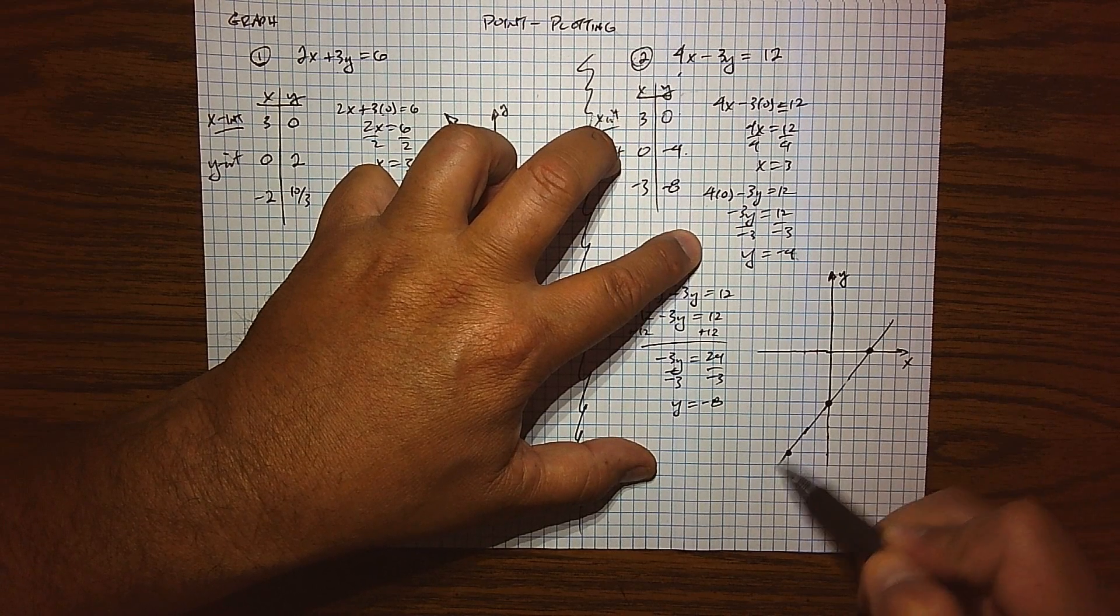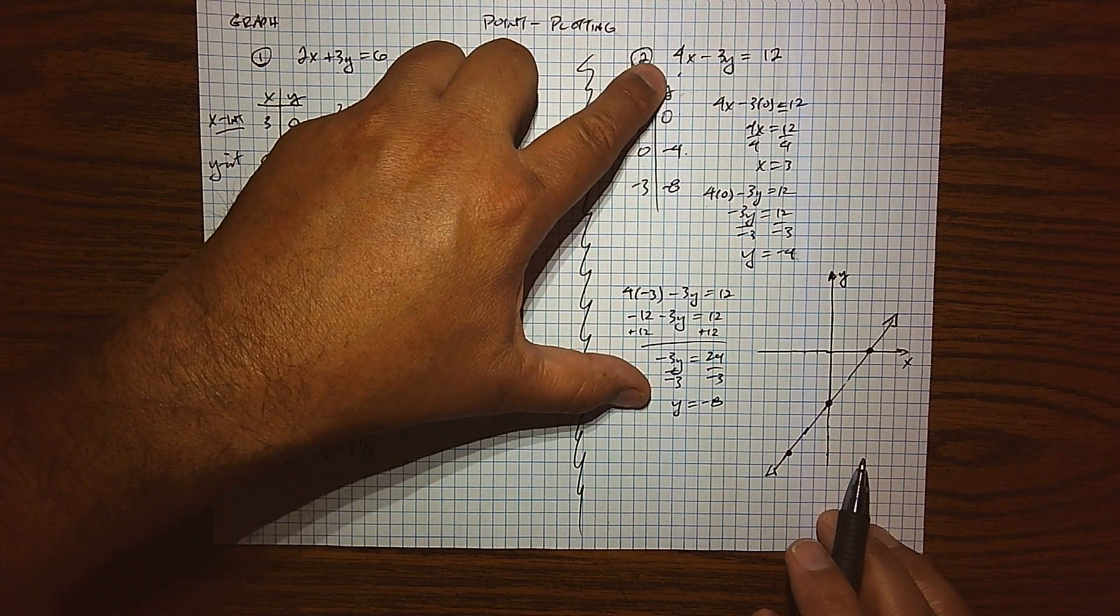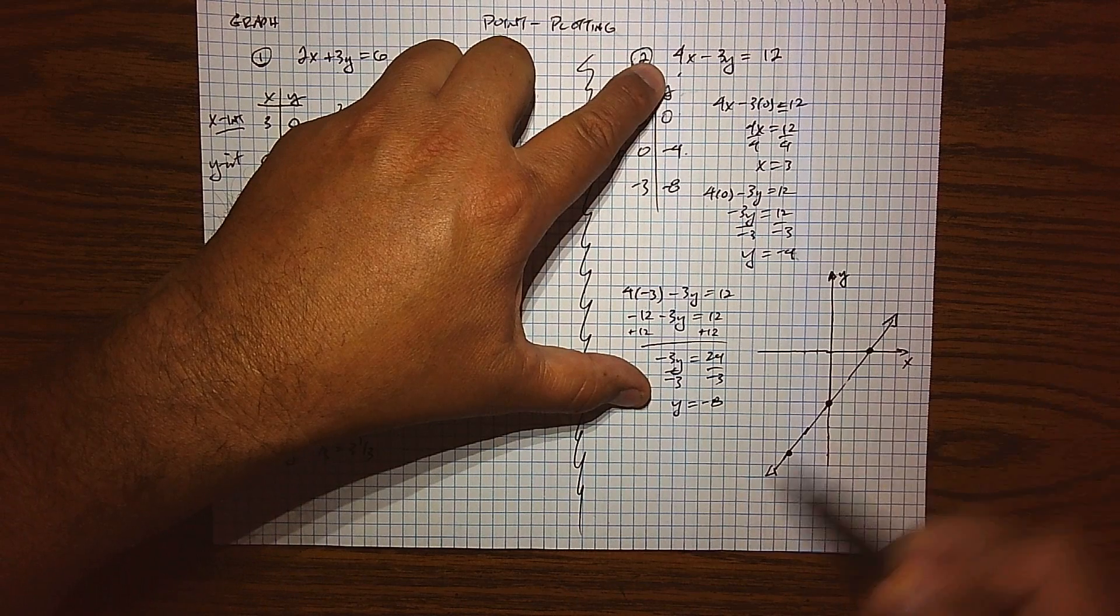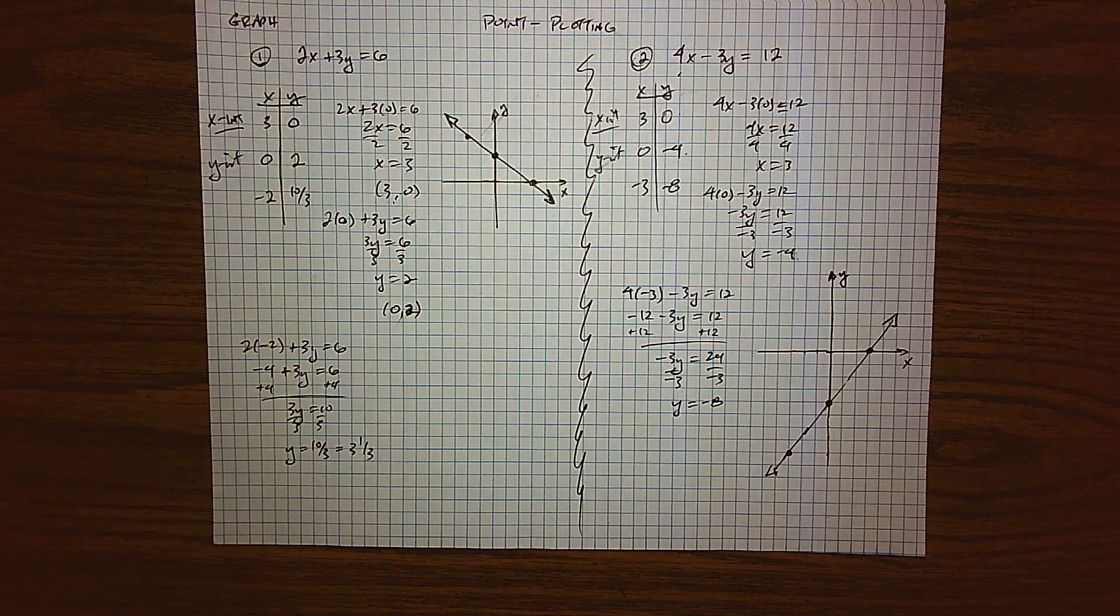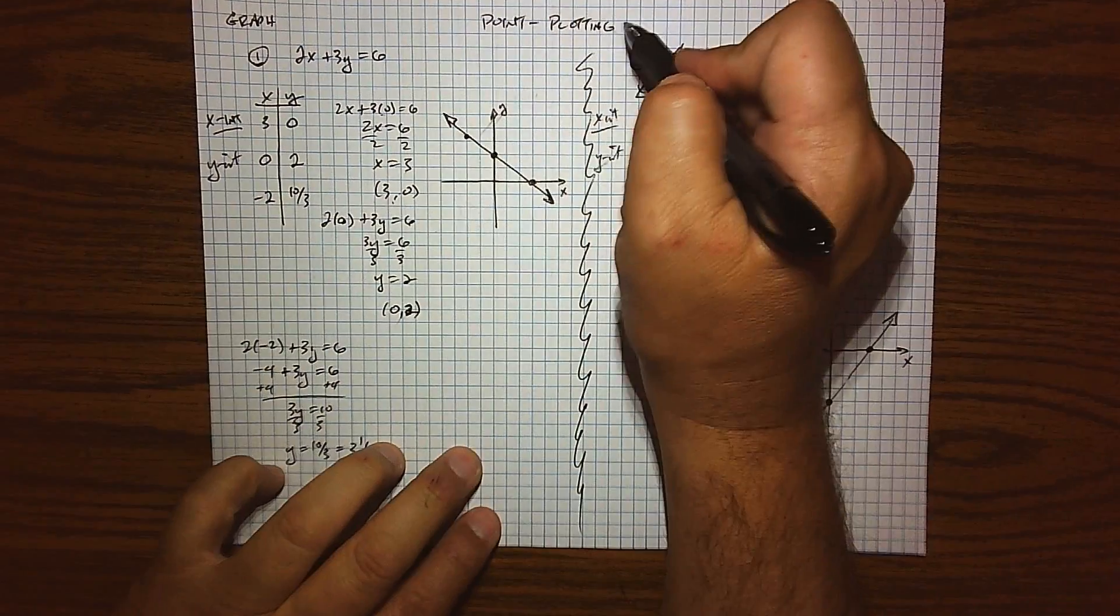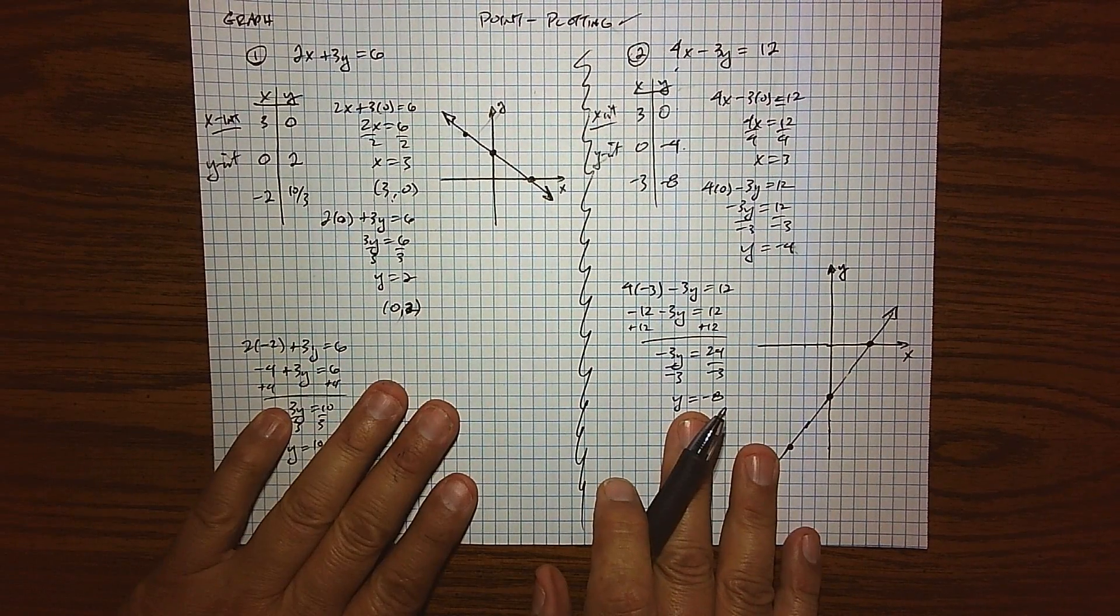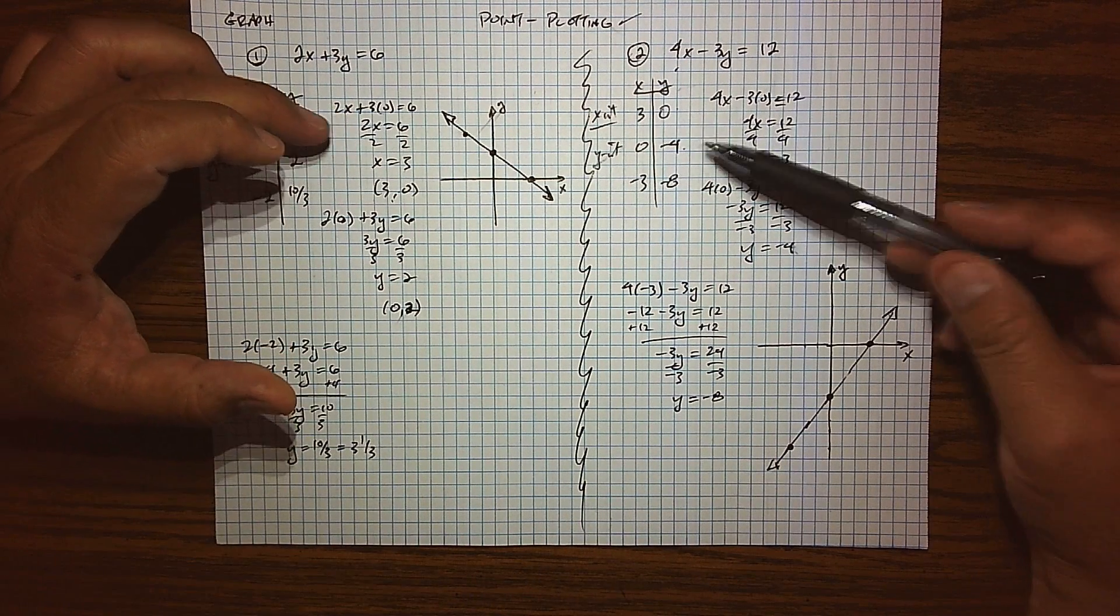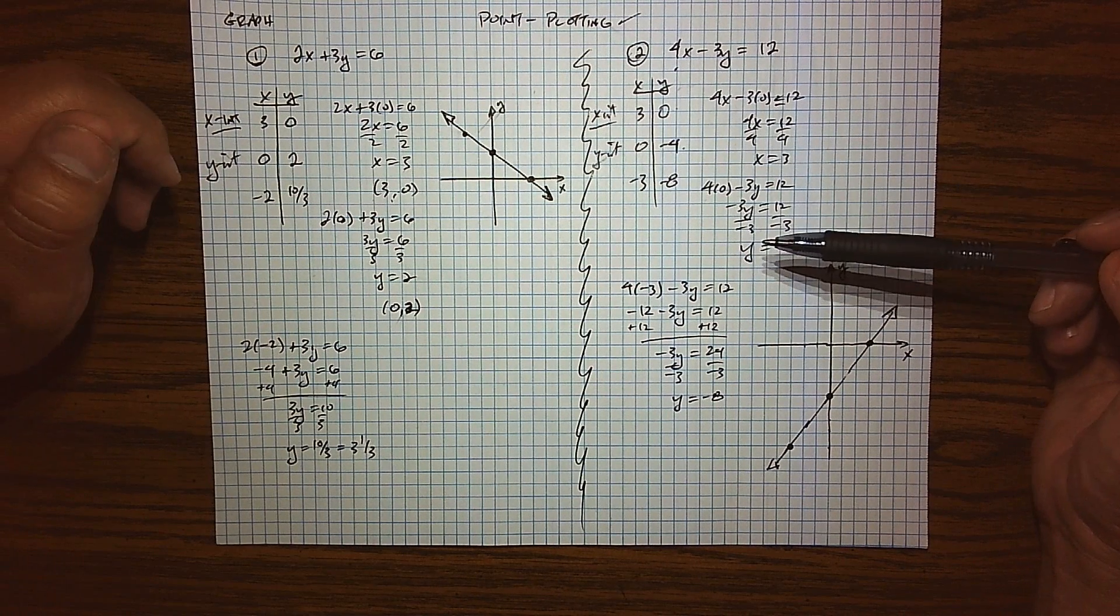So what's the graph? What are the solutions to the equation 4x minus 3y equals 12? Well, all the solutions line up along that graph. A visualization of the solution points to an equation. And so that's how we can do some point plotting with our x-intercepts. Again, still a little labor intensive, but it shortens things up by letting x equal 0 or letting y equal 0. X-intercept, y-intercept. You still got to find that third point though.